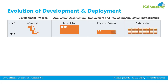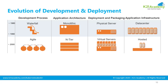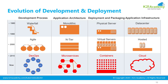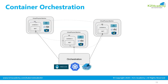Similarly, the application architecture has gone from monolithic to N-tier — where you have a database tier, apps tier, or web tier — to now microservices. These microservices run on containers, and when you have hundreds and thousands of containers running across different machines, you need an orchestration tool like Kubernetes to manage them.